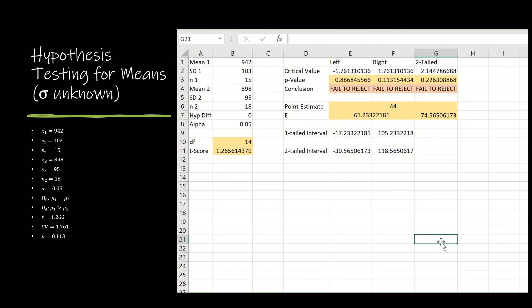I did end up with 14 degrees of freedom, a t-score of 1.266, a critical value of positive 1.761, a p-value of positive 0.1132. We did fail to reject, and this is the interval that we came up with.